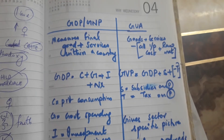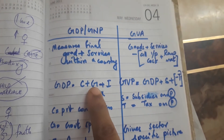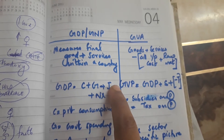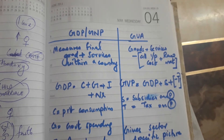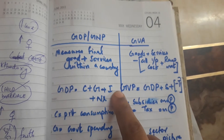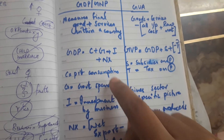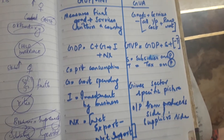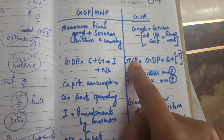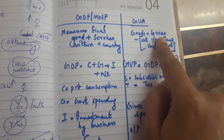GDP is the sum total of all private consumption, plus all government spending, plus investment from the business side (I), plus NX — where NX is the difference between exports minus imports. So that is GDP.